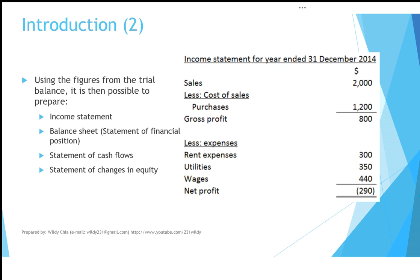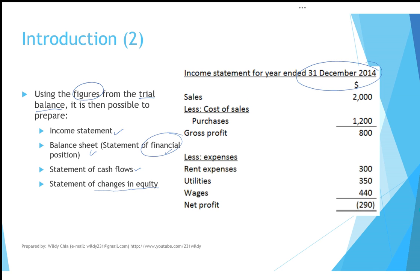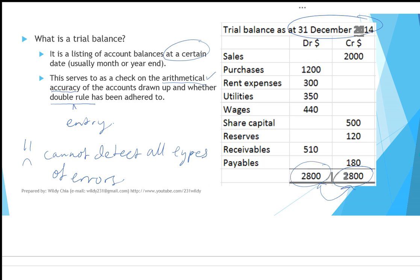The trial balance provides the numbers which are the basis for preparing items such as the income statement, as you can see on the right. It also makes it possible to prepare the balance sheet, also known as the statement of financial position. Preparation of the cash flow statement is also based on the trial balance, as is the statement of changes in equity. The income statement is prepared using the numbers straight from the trial balance, so it is important that the trial balance is as accurate as possible.